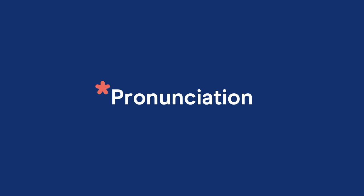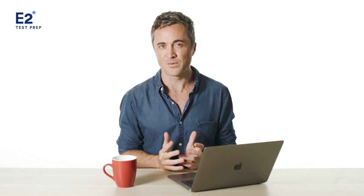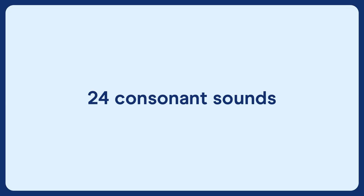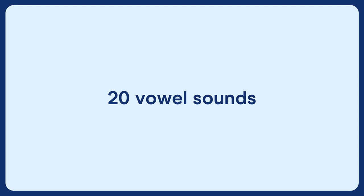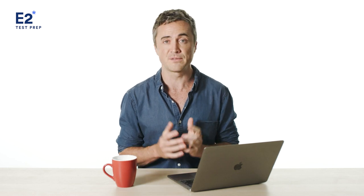Good pronunciation is all about clarity — clarity of the sounds of English. In English there are 24 consonant sounds, which are sounds that use some part of your mouth like your lips, teeth, tongue, or throat. There are also 20 vowel sounds, which are sounds unimpeded by any part of your mouth. So there are 44 individual sounds or phonemes.